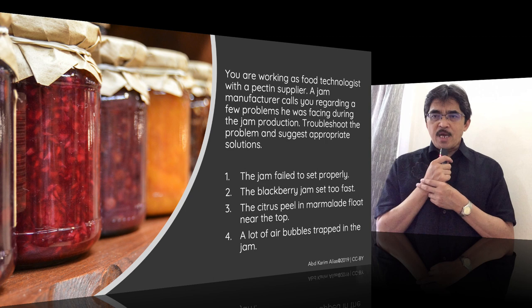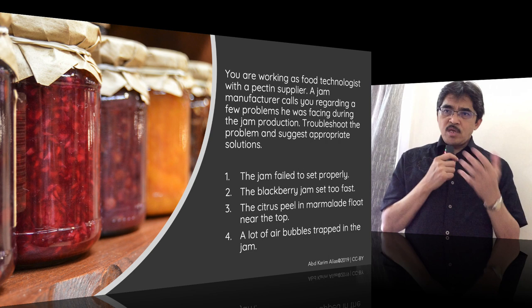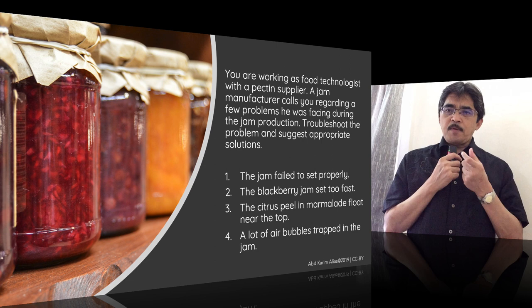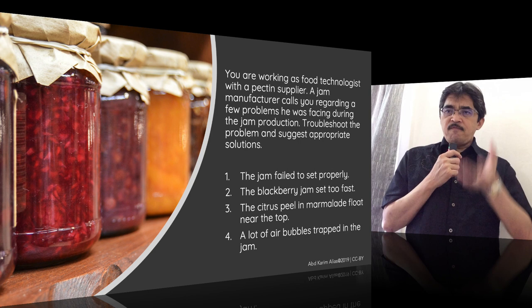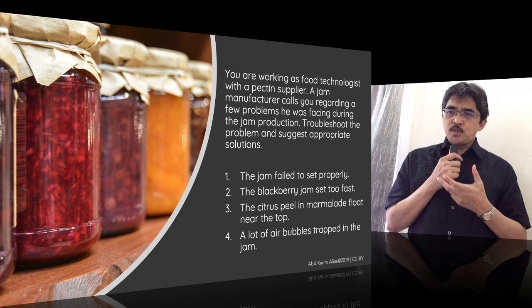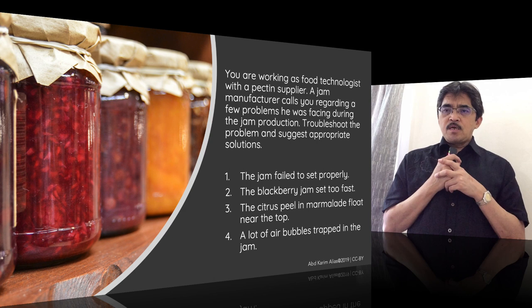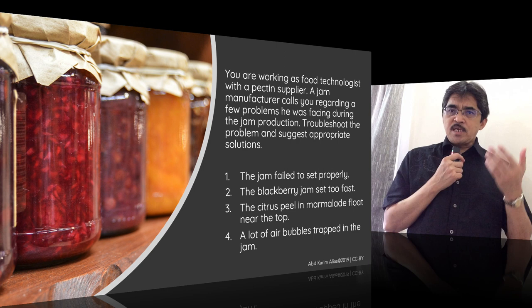Problem 4 — a lot of air bubbles trapped in the jam. Air bubbles always form during processing when you heat the mixture. When the jam sets too fast, there isn't enough time for the air bubbles to move out of the jam mixture. This happens when using a rapid-set pectin. We need to adjust the gelling time so the air bubbles have enough time to escape from the mixture before it sets.